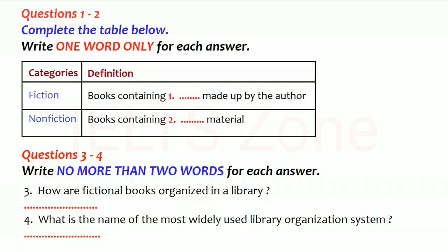All the fictional books in a library are grouped in one section. They are arranged alphabetically by the last name of the author. Many libraries also label the spines of all books of fiction with the letters FIC or F. All libraries have a system for organising and classifying non-fiction books.